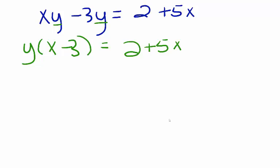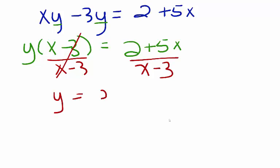Our final step to isolate y on the left side of the equation is to divide x minus 3 from both sides. This leaves me with y equals 2 plus 5x, divided by x minus 3.